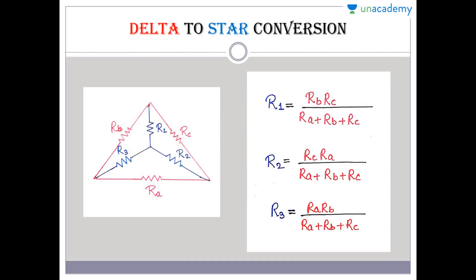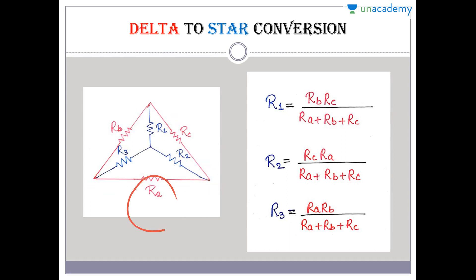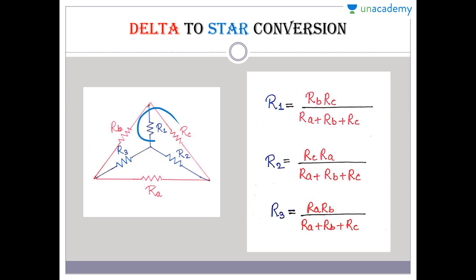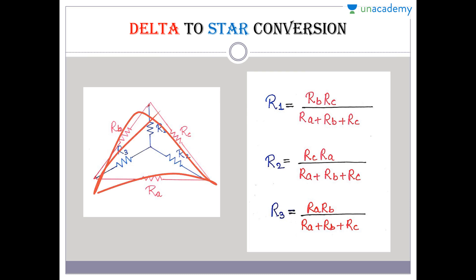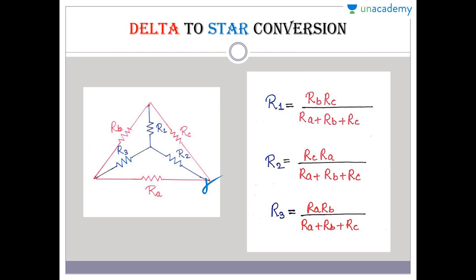Now, how to convert delta to star. Suppose a delta connection is given — that means R_A, R_B, and R_C are given — and we have to convert it into a star to find R1, R2, and R3. All you have to do is place a star connection touching the same three nodes of the delta.